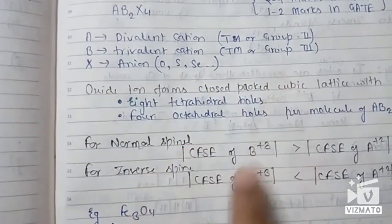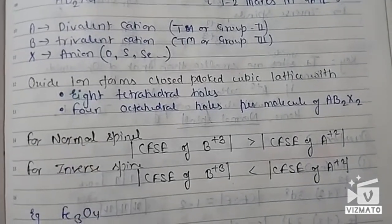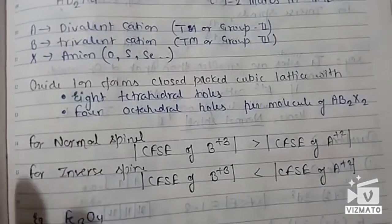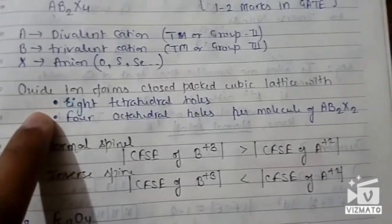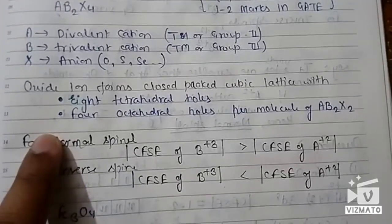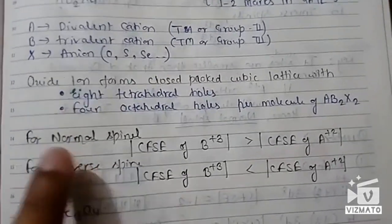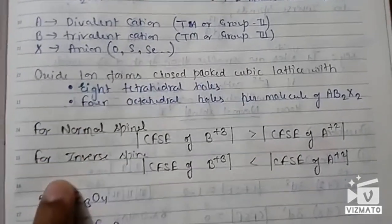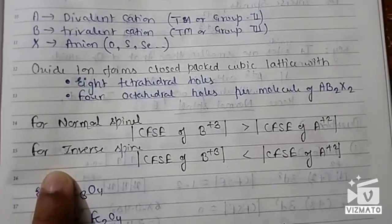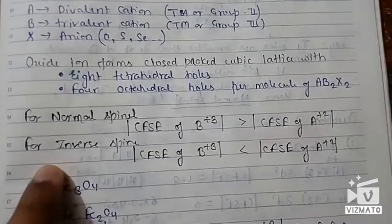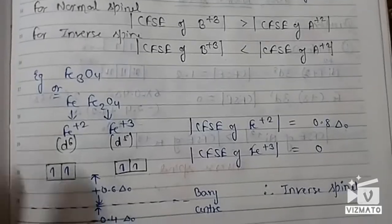The basic theory is that the oxide anion forms a close-packed cubic lattice with eight tetrahedral holes and four octahedral holes per formula unit of AB₂X₄.